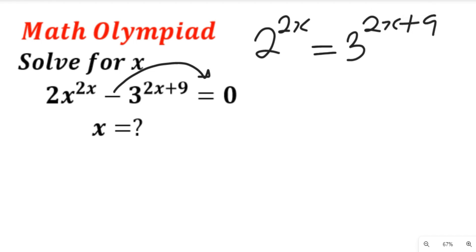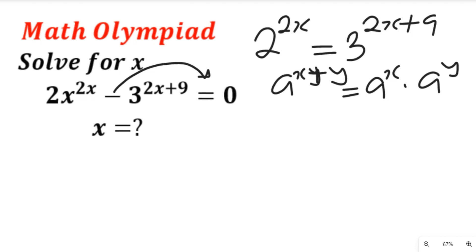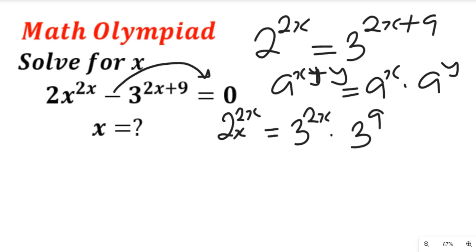Now we remember a principle in the law of indices — the product law — which states that a to the power of x plus y is equal to a to the power of x multiplied by a to the power of y. Implementing that, 3 to the power of 2x plus 9 becomes 3 to the power of 2x multiplied by 3 to the power of 9.